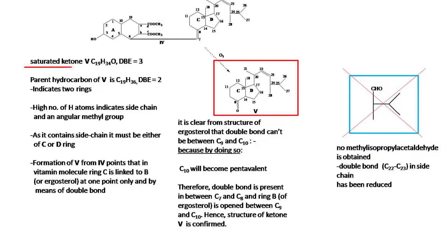Saturated ketone fifth has molecular formula C19H34O with double bond equivalent of three. The parent hydrocarbon of fifth is C19H36 with double bond equivalent equal to two, indicating two rings. High number of hydrogen atoms indicates side chain and angular methyl groups.